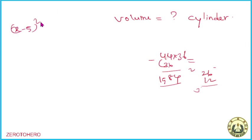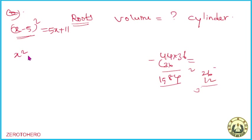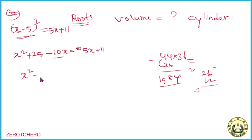x5 whole square, c: 5x plus 11 — this is the root. This is a minus b whole square: x squared plus 25 minus 2ab, which is 10x. This is equal to 0. Now, this is 5x plus 11. x is equal to 1, that is equal to 0 — this is one parameter. x squared equals 5x, then equals x, then equals minus 15, so this equals minus 15x. So we get x and minus 14, which equals 0.